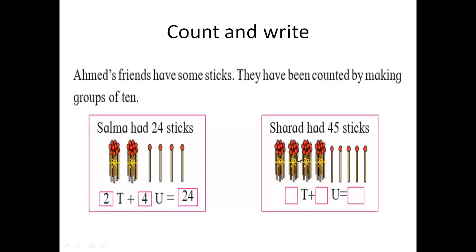Now we will count these matchsticks. Sharad had 45 sticks. Can you write 45 in the form of tens and units? So here are 4 groups of 10 matchsticks — that is 4 tens. And the single matchsticks are 5, so 5 units. So 4 tens means 40, plus 5 units. 40 plus 5 is equal to 45.